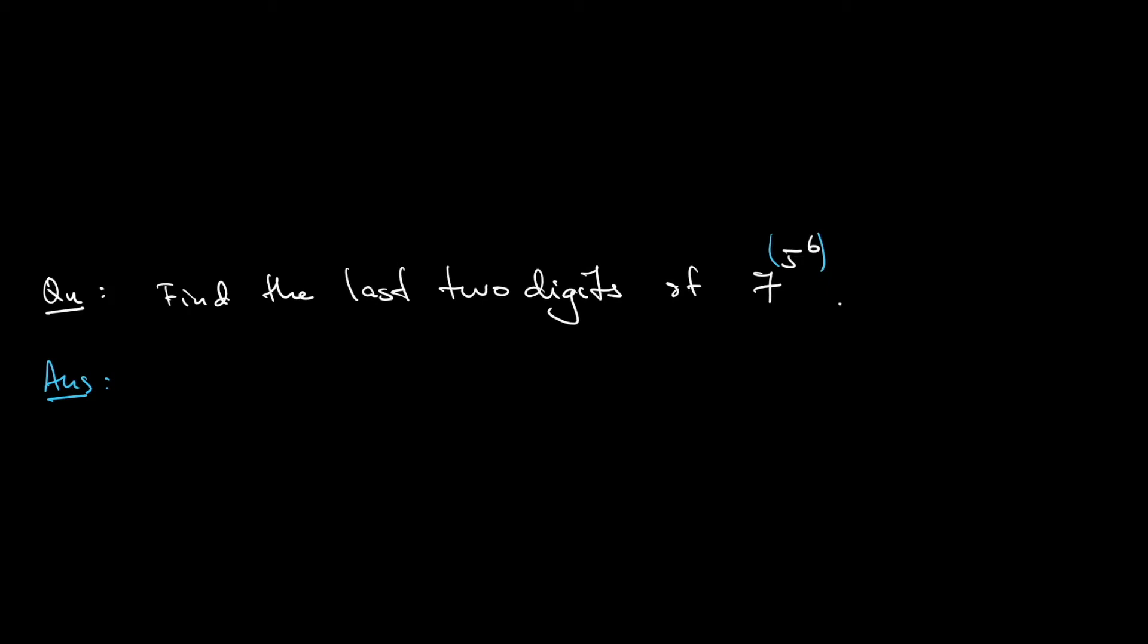So first thing first. Notice that 7 to the power of 4 minus 1. 7 to the power of 4 is 2,401. Okay, so minus 1 that is 2,400. Alright,